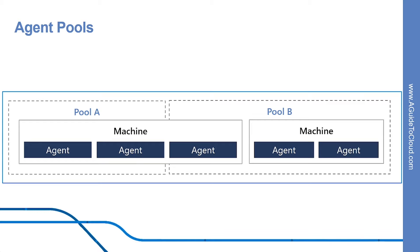In Azure Pipelines, agent pools are scoped to the Azure DevOps organization, so you can share an agent pool across projects. A project agent pool provides access to an organization agent pool. When you create a build or release pipeline, you specify which pool it uses. Pools are scoped to your project, so you can only use them across build and release pipelines within a project. To share an agent pool with multiple projects, in each of those projects you create a project agent pool pointing to an organization's agent pool. While multiple pools across projects can use the same organization agent pool, multiple pools within a project cannot use the same organization agent pool.